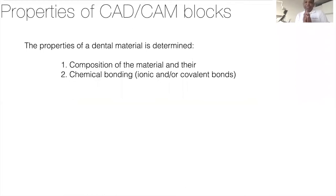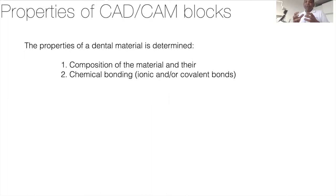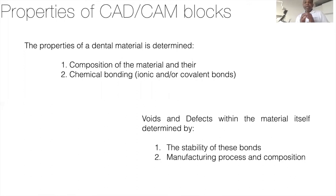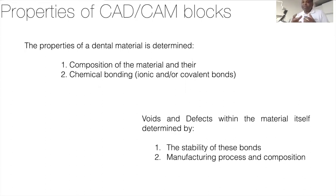Besides the optical properties, what about the physical properties of the block? The mechanical properties of a dental material are determined firstly by the composition of the material itself, and also the chemical bonds — ionic or covalent — that hold the elements together. The stability of these bonds determines whether there are defects within the material, and the actual manufacturing process determines whether voids or defects are present.